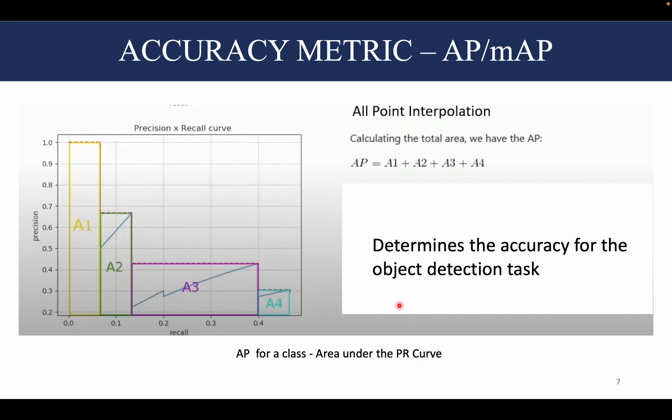Talking about the accuracy metric for the task of object detection, it is called the average precision or mean average precision. The average precision for a class would be the area under the precision and recall curve for that particular class.